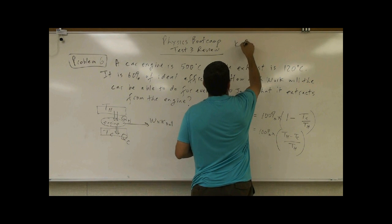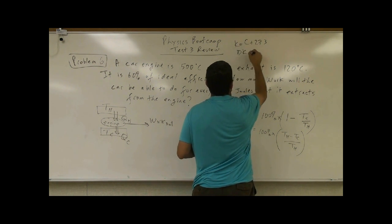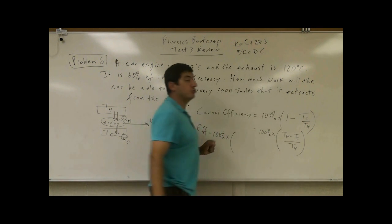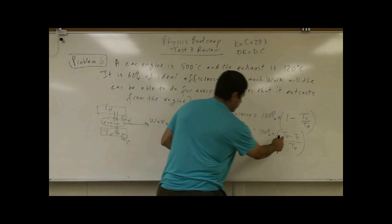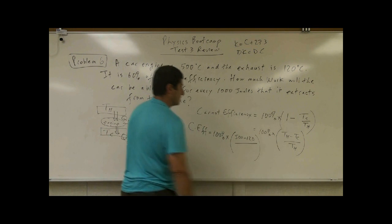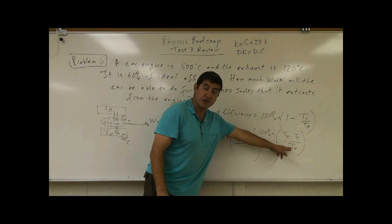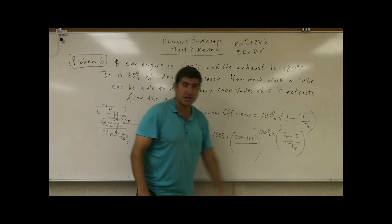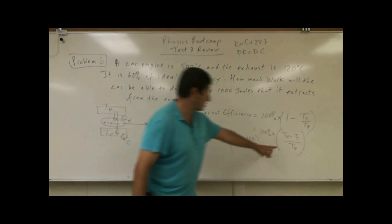Kelvin is equal to Celsius plus 273. Delta K is equal to delta C. So unit change of Kelvin is the same as a unit change of Celsius. So 500 minus 120. But the hot reservoir, the temperature T hot, I have to put it in its actual Kelvin scale. This one here.